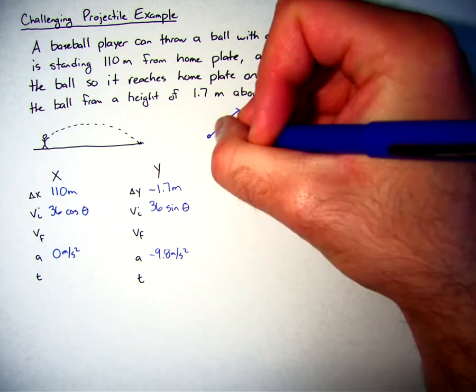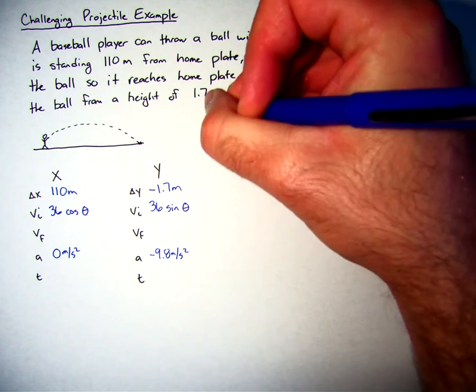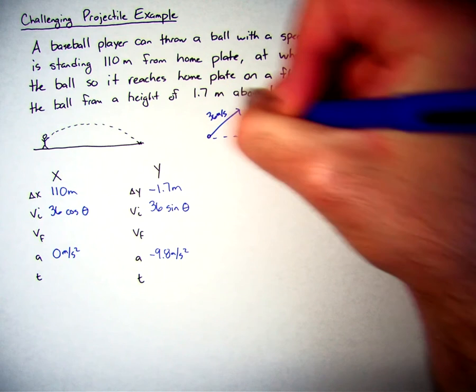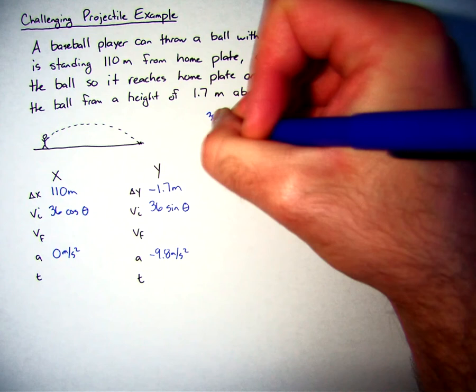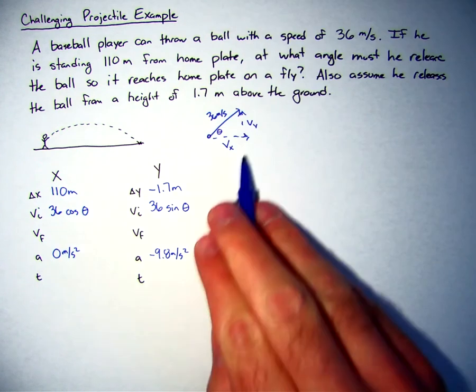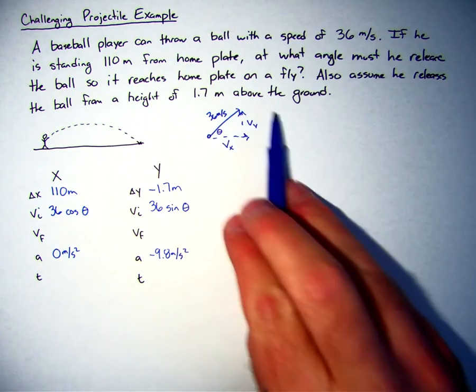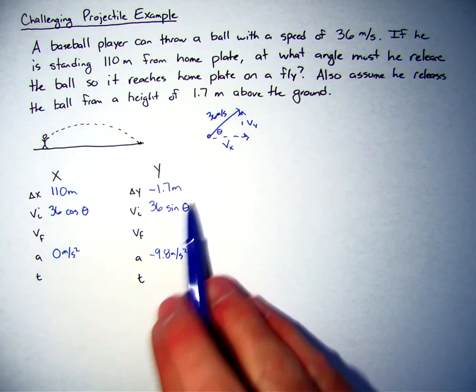So if you think about it, if I draw up my vector, this is 36 meters per second, and if I wanted to figure out my x and my y, if this is the angle theta here, I'd use cosine to find the x component, I'd use sine to find the y component. So I'm just going to use those.